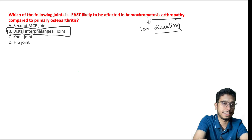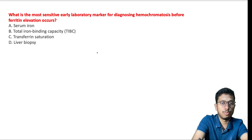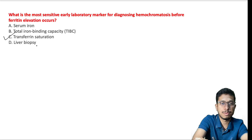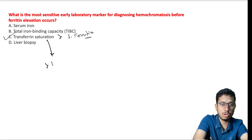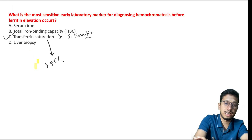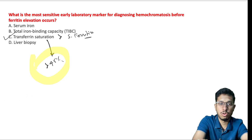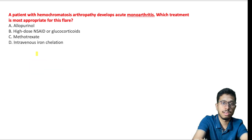What is the most sensitive early laboratory marker for diagnosis? It is transferrin saturation — a better marker than serum ferritin level. Transferrin saturation of more than 45 percent is the earliest indicator of iron overload.